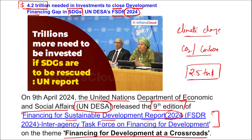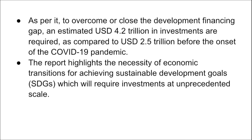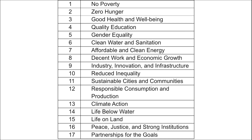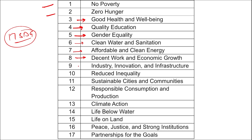We need to shift our economic transitions for achieving these Sustainable Development Goals. There are 17 SDGs: No Poverty, Zero Hunger, Good Health and Well-being, Quality Education, Gender Equality, Clean Water and Sanitation, Affordable and Clean Energy, Decent Work and Economic Growth, Industry Innovation and Infrastructure, Reduced Inequality, Sustainable Cities and Communities, Responsible Consumption and Production, Climate Action, Life Below Water, Life on Land, Peace Justice and Strong Institutions, and Partnerships for the Goals.